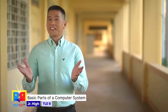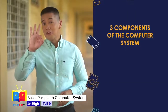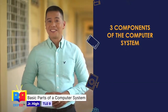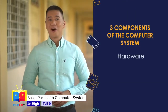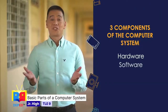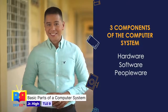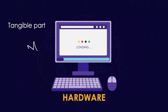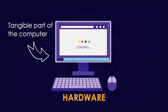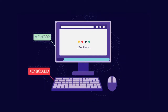We can categorize computer systems into three components. We have the hardware, the software, and the peopleware. Hardware is the physical or tangible part of the computer. When you say tangible, these are the parts you can touch. Some examples are the monitor, keyboard, and mouse.